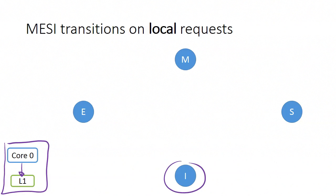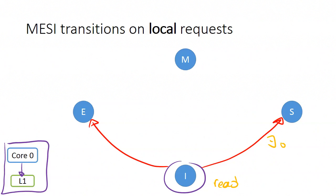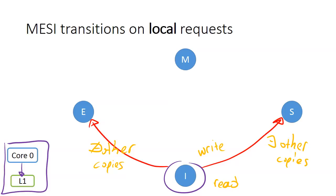Starting with the invalid state, if core 0 is trying to read this cache line, once the data are brought into the L1 of core 0 we will have a transition to either the shared state or the exclusive state. The data will be brought in the shared state if there exist other copies of the data in the cache hierarchy — for instance, if core 1 has a copy. On the contrary, if there are no other copies anywhere in the cache hierarchy and only a copy in memory, the data will be brought in the exclusive state.